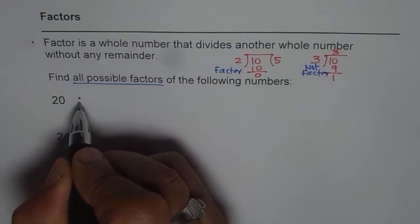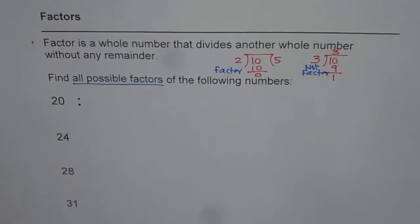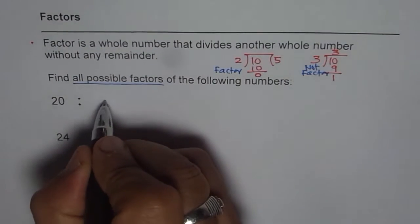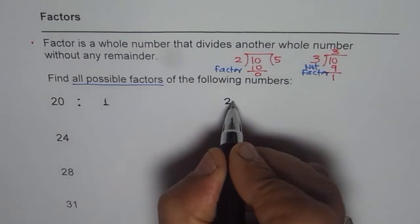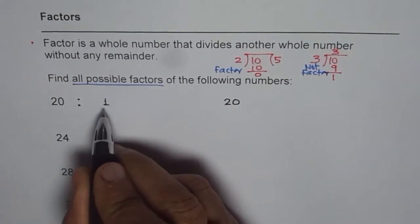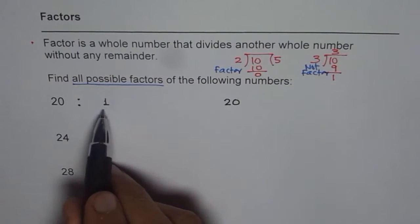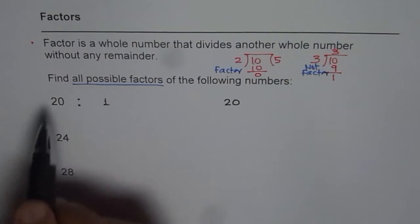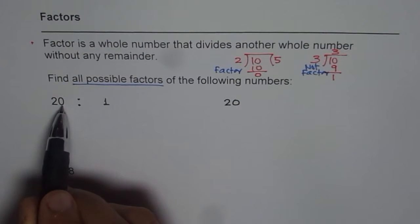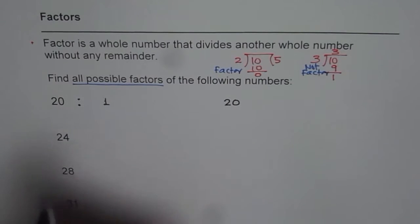Always 1 is a factor of each and every number. We say 1 times what is 20? The number itself. So 1 times 20 is 20, so we get 2 factors. The way I am writing is kind of interesting because it takes care of all the possible factors. Now 20 is an even number, it ends with 0, therefore 2 is a factor.